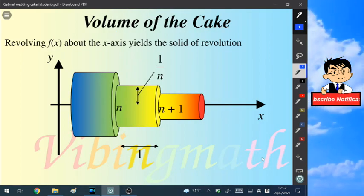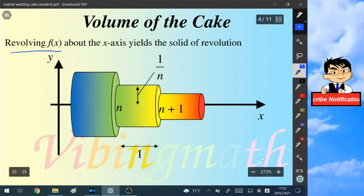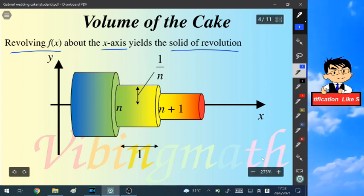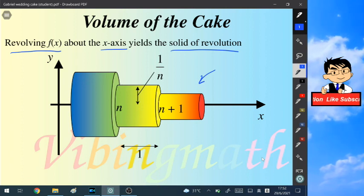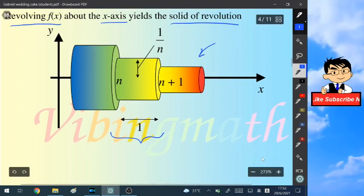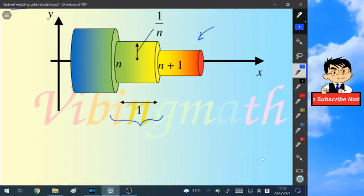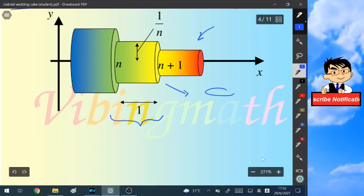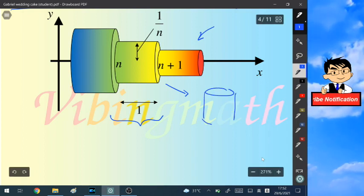So to generate the cake, we will rotate the previous function about the x-axis, and we will have the solid of revolution of this shape. And to calculate its volume, we will focus on one part of this cake.